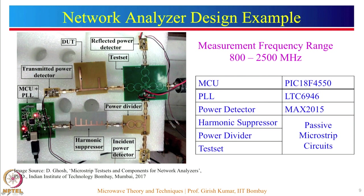The fundamental frequency component is divided into two parts. The incident power detector measures one part, and the rest is given to the DUT through the test set. Some power transmitted by the DUT is measured using the transmitted power detector. The reflected power is separated from the incident signal using the test set and measured using the reflected power detector. Power detectors are implemented using MAX 2015 ICs, and the harmonic suppressor, power divider, and test set use passive microstrip techniques.